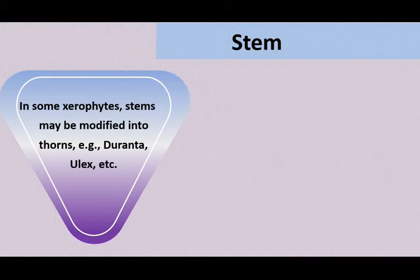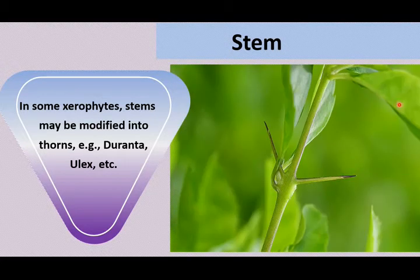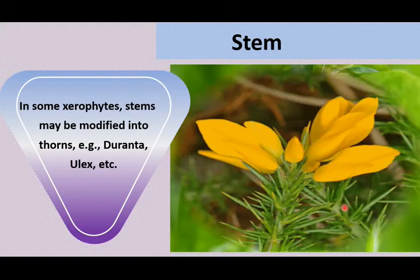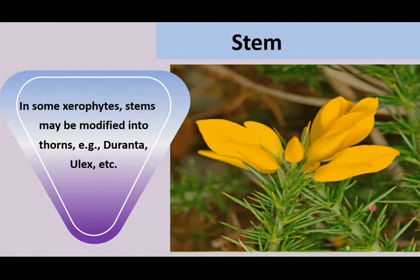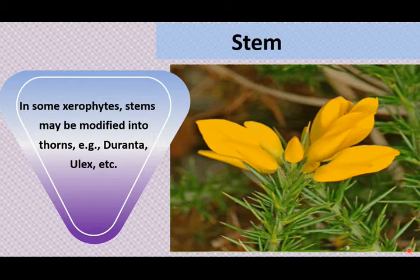In plants like Duranta and Ulex, the stem is modified into thorns. The sharp-pointed thorn structures visible on these plants are actually stems, not leaves. This modification prevents the plant from undergoing excess transpiration and thus helps in conservation of water.